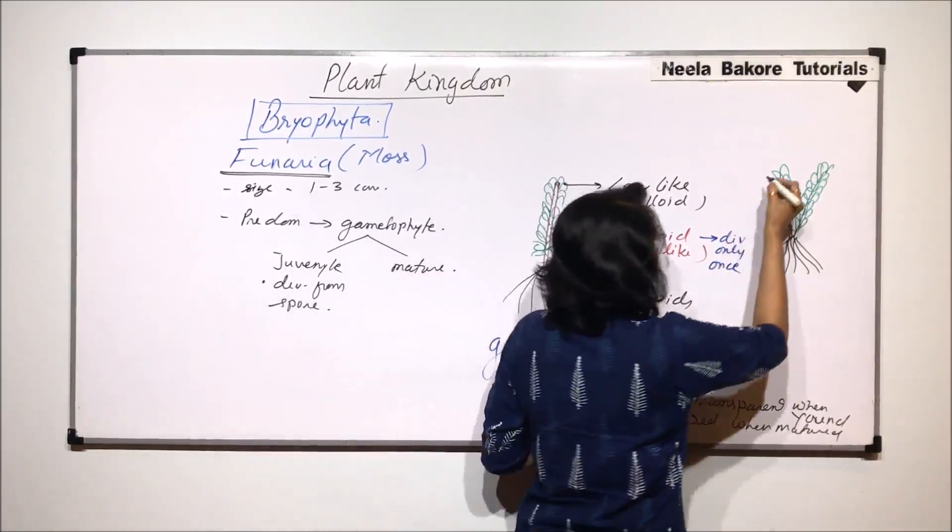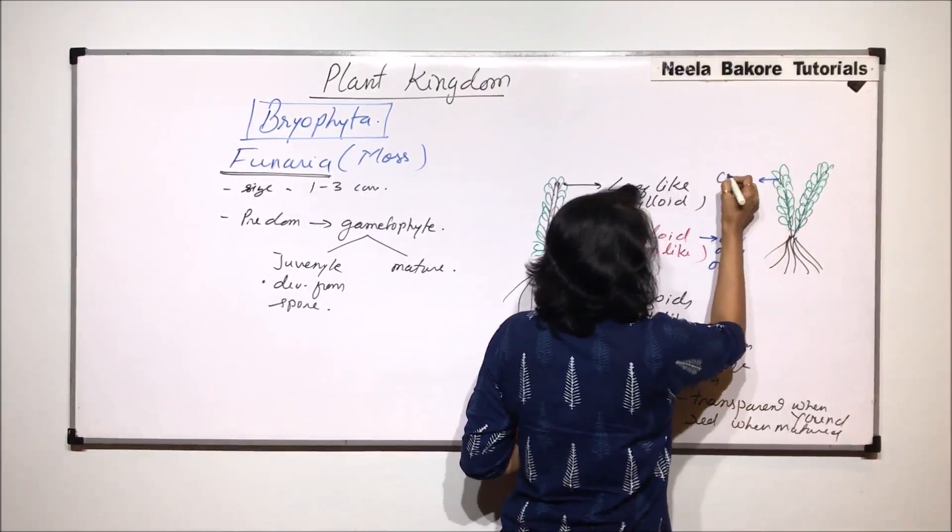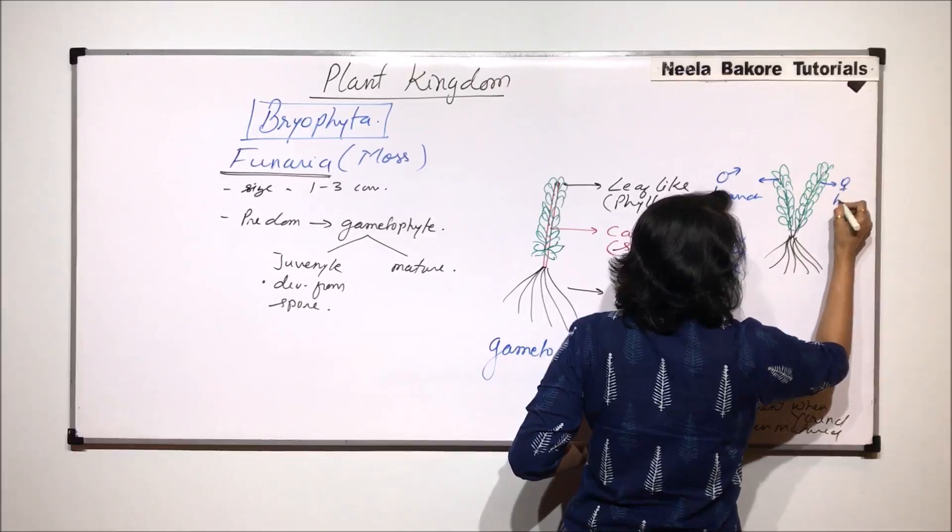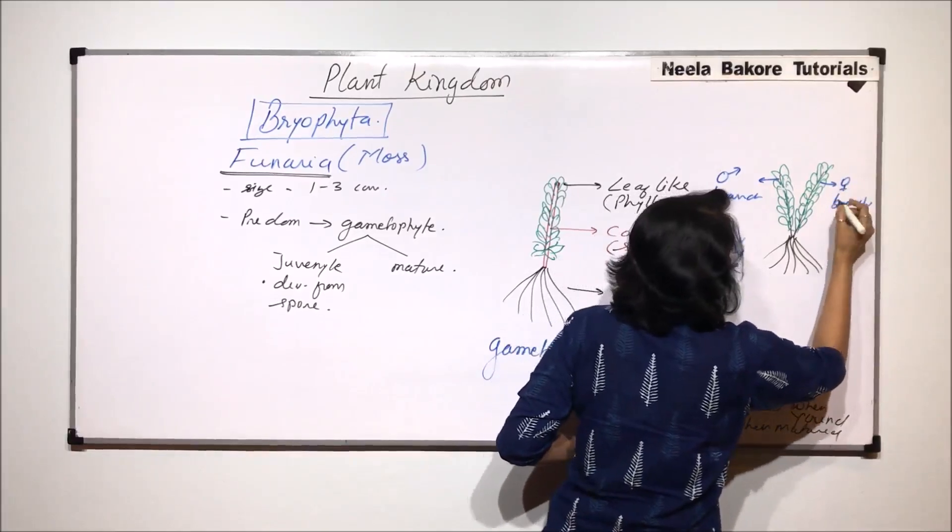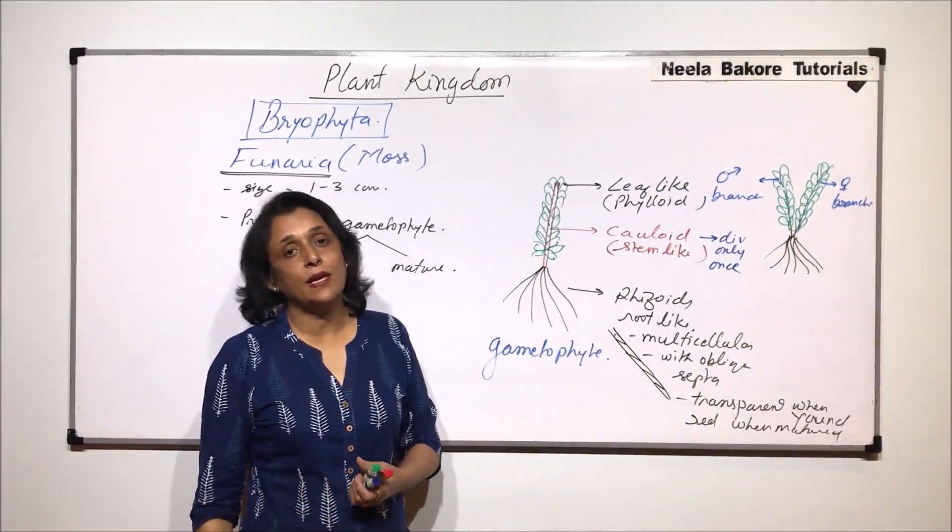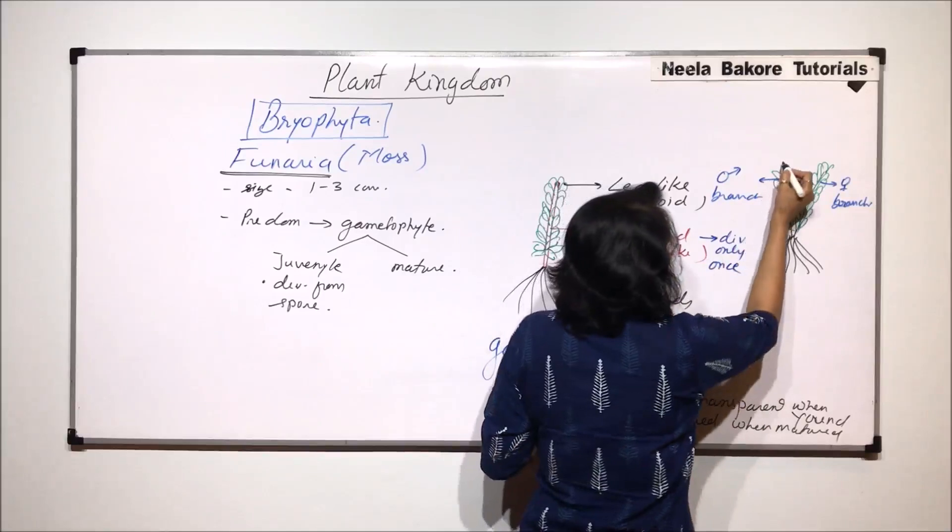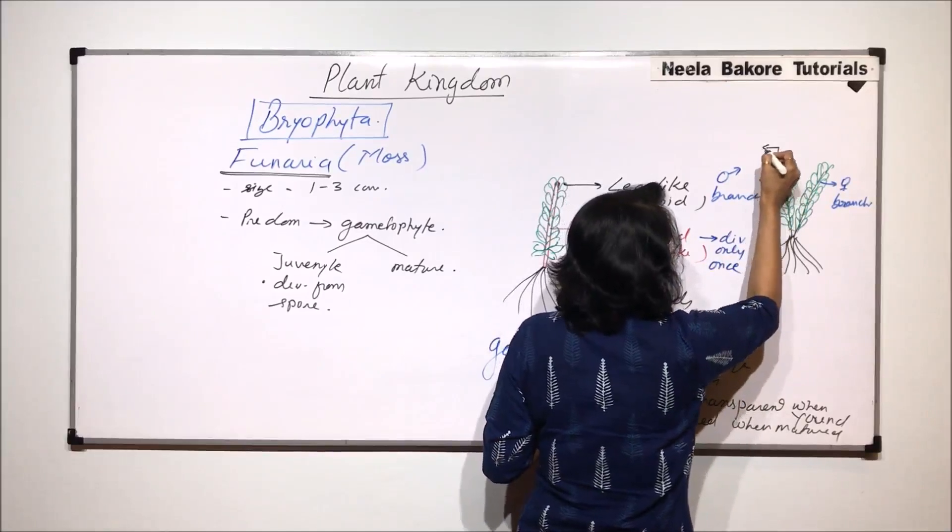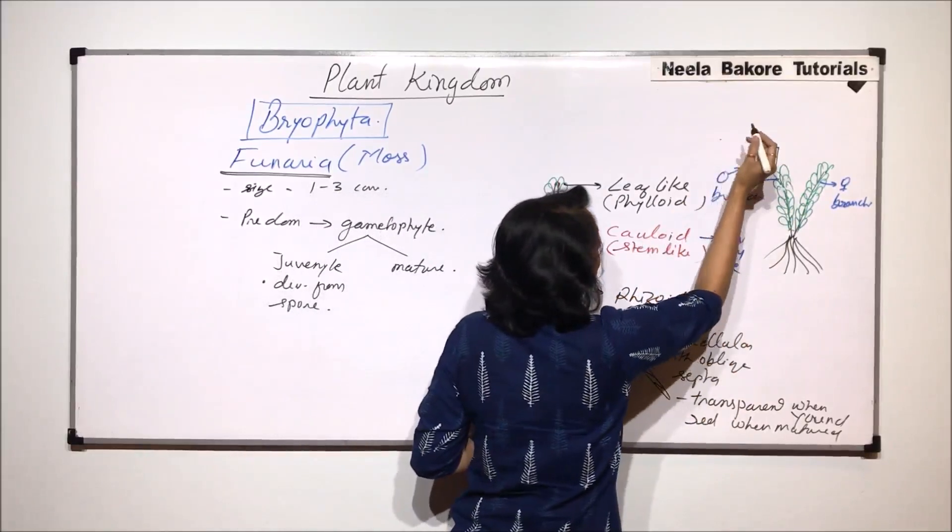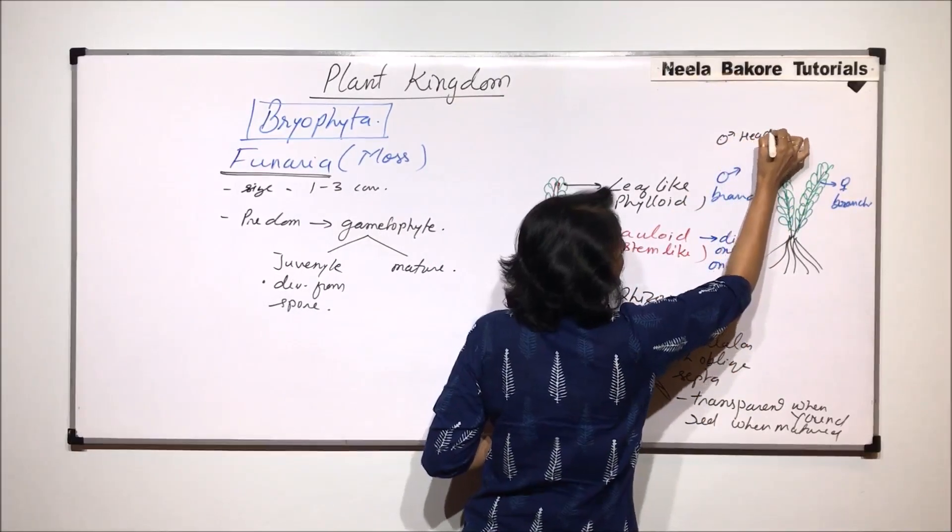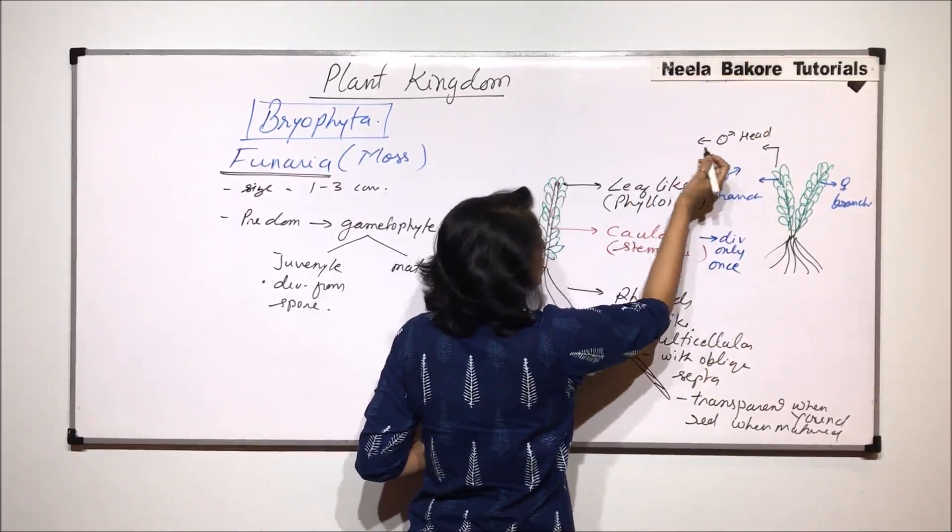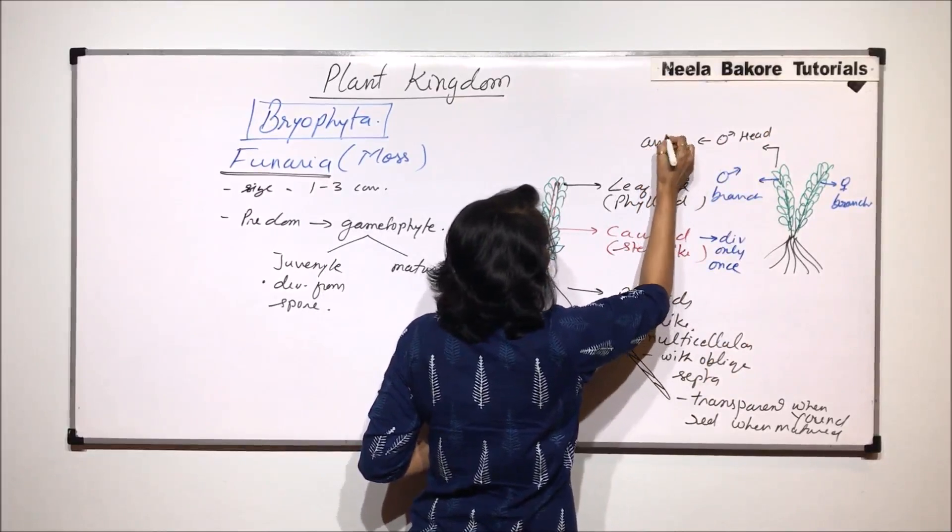One branch is a male branch and the other branch is the female branch. Now how do we identify whether the branch is a male branch or a female branch? At the tip of the male branch there are male sex organs and this area is known as the male head. And here we would find many sex organs which are known as antheridia.